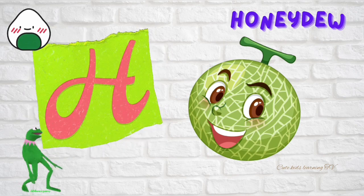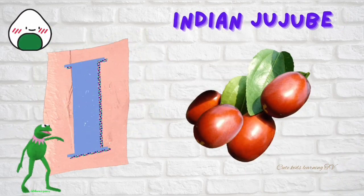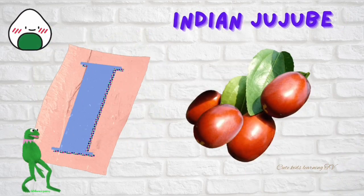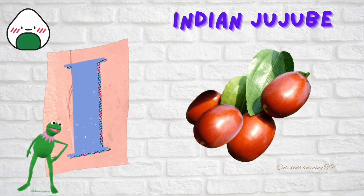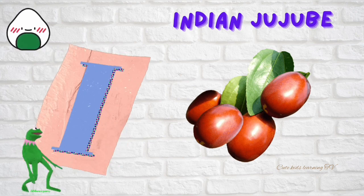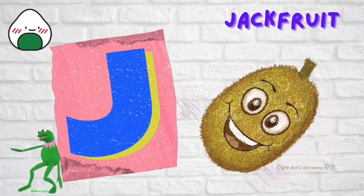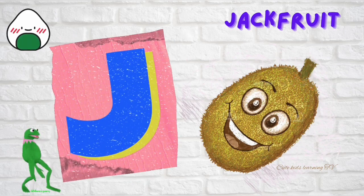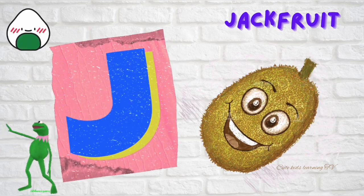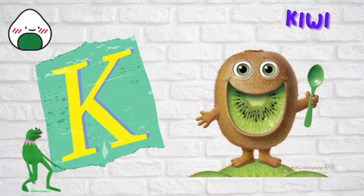H is for honeydew. I is for Indian jujube. J is for jackfruit. K is for kiwi.